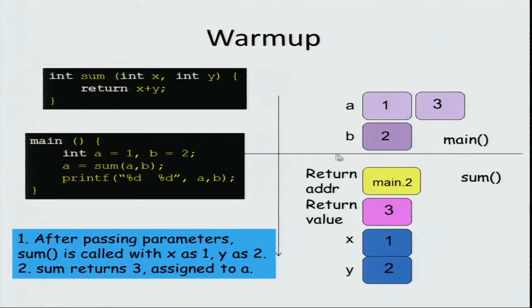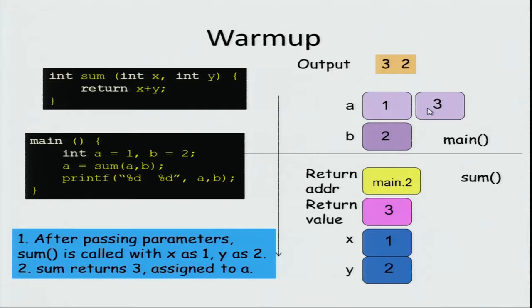Sum returns 3, so the return value is 3 and the 3 is assigned back to a. When you print it, the output will be 3 followed by 2. This is simple enough.